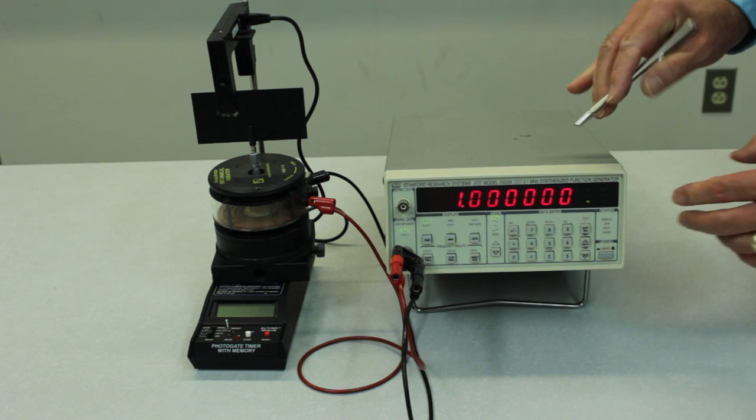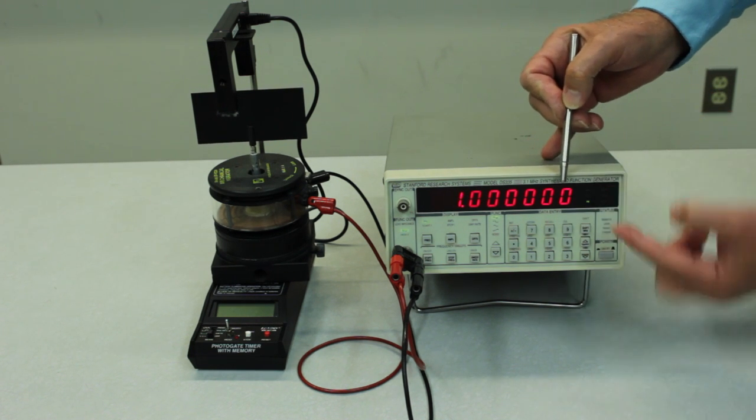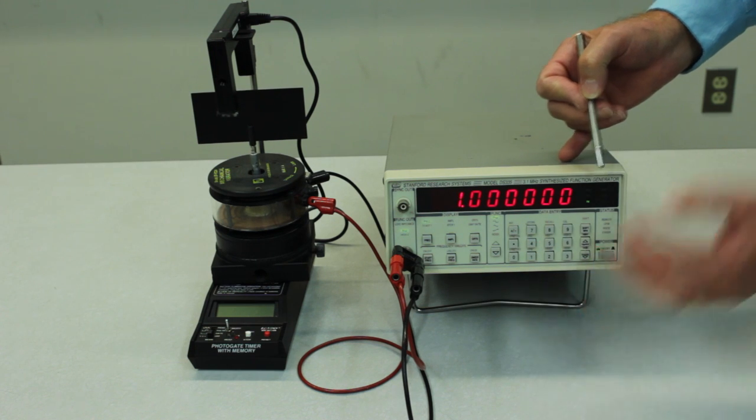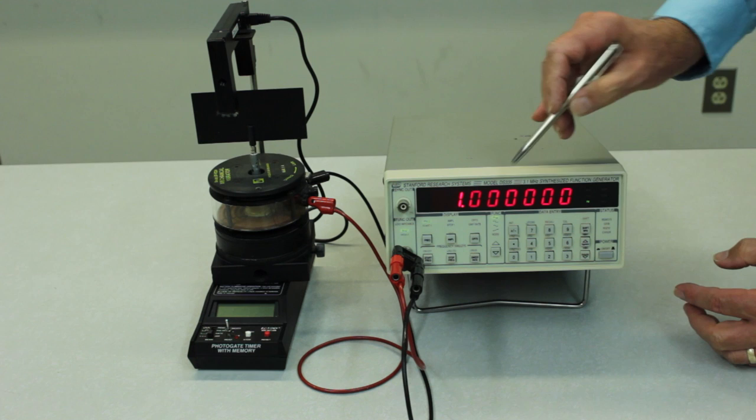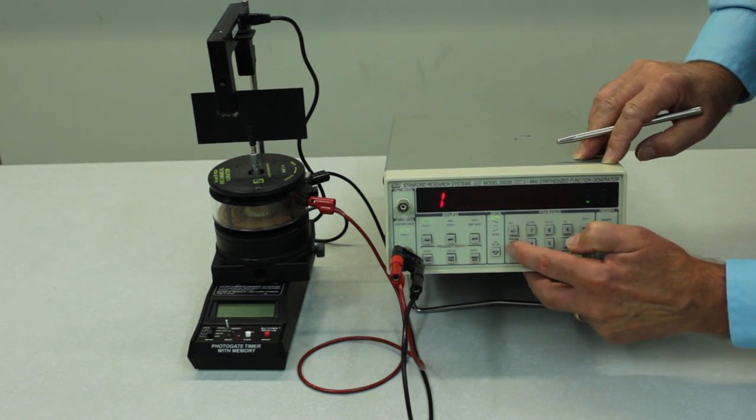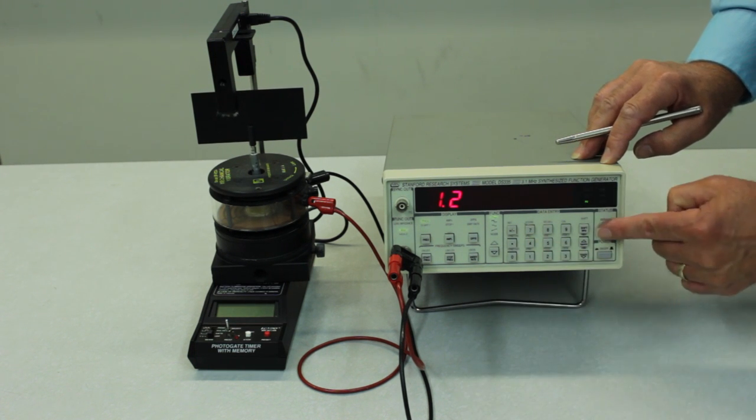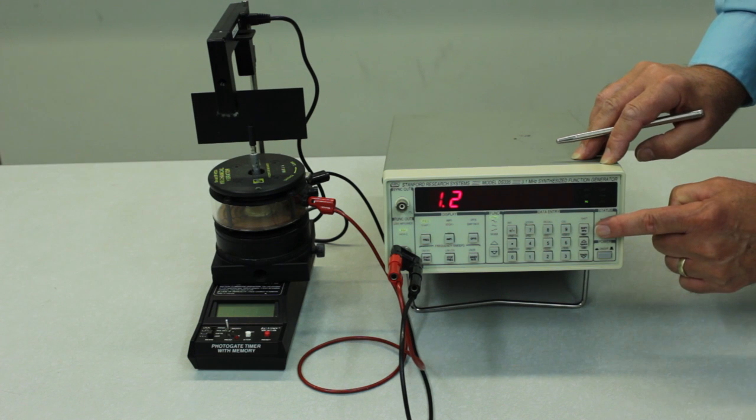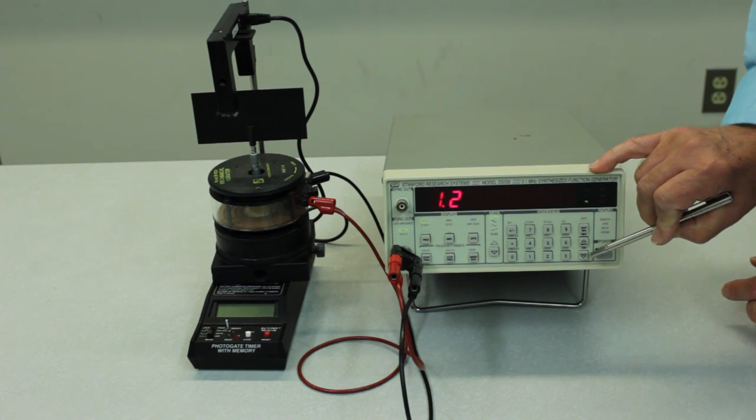So what we'll do, this is a good physics device, and it requires that you tell it not only the number, the frequency, but you also have to tell it the units. So right now we've got a frequency of one hertz. Suppose we want to change this to 1.2 hertz. You just punch in 1.2, and then you tell it what units you want. The choices are megahertz or kilohertz or hertz.